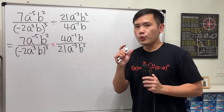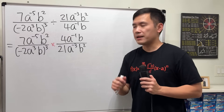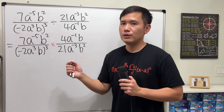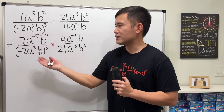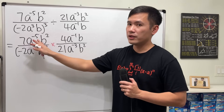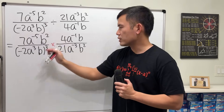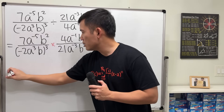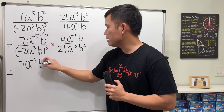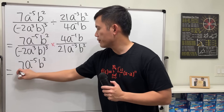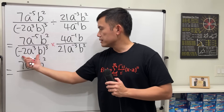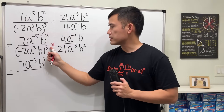We are going to do one part at a time. First, can we do anything right here? No — the 7 is just 7. Negative exponent — I will tell you to keep it for now. Likewise, this also keep it. So we have 7a to the negative 5, b squared. Over — right here we have this parentheses raised to the third power. What can we do?